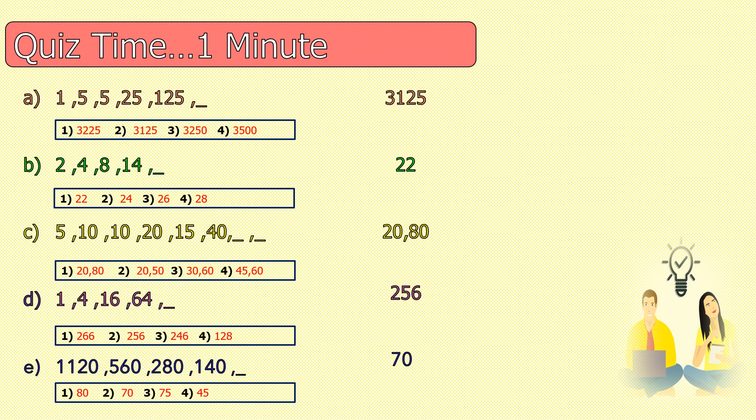For question number 1, we get the third term by multiplying the two previous terms. 1×5=5, 5×5=25, 5×25=125, and 25×125=3125. That's our answer.